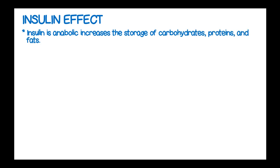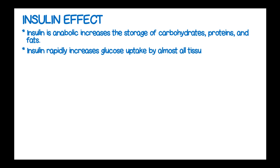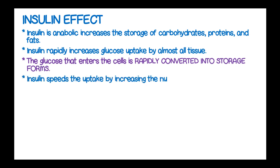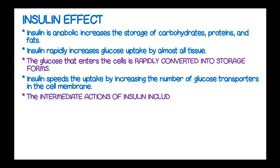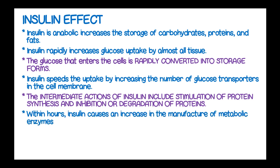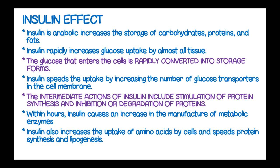Insulin rapidly increases glucose uptake by almost all tissues in the body. The glucose that enters the cells is rapidly converted to storage forms, that is glycogen. Insulin speeds up uptake by increasing the number of glucose transporters in the cell membrane. The intermediate actions of insulin include stimulation of protein synthesis and inhibition of protein degradation. Within hours, insulin causes an increase in the amount of manufactured metabolic enzymes, increases uptake of amino acids by cells, and spurs protein synthesis and lipogenesis.